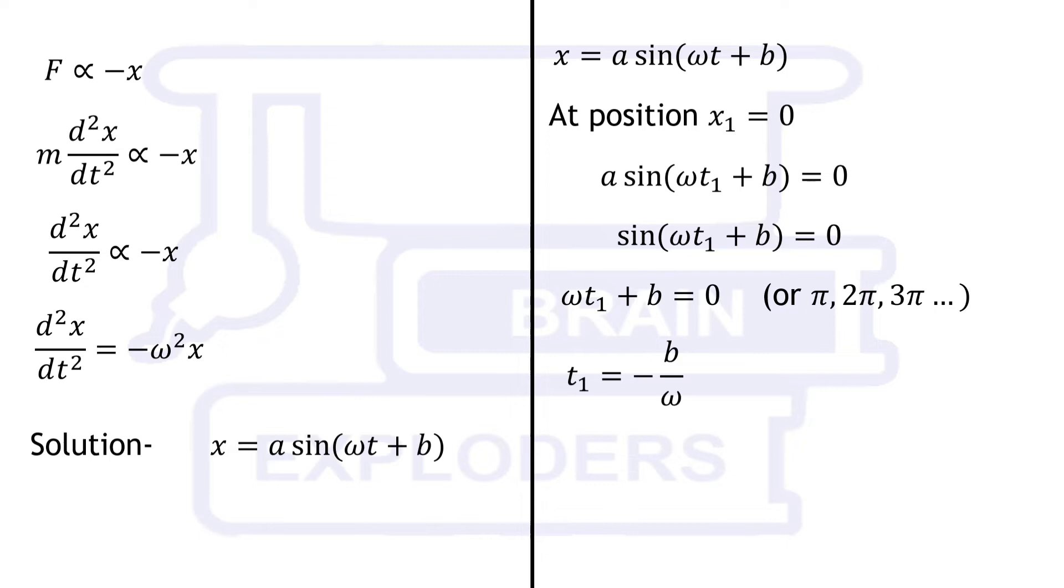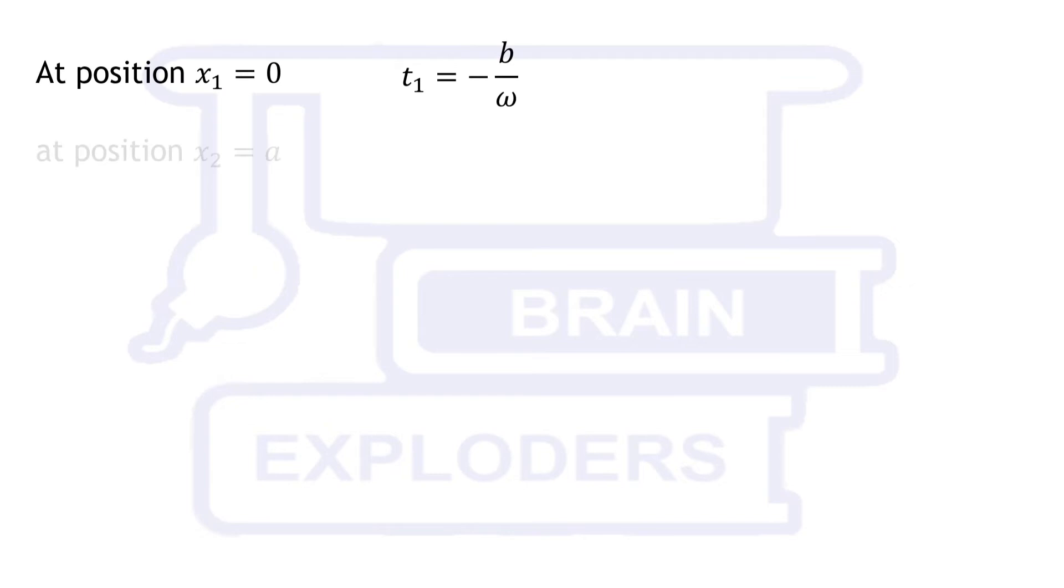Similarly, when object is first time at extreme position or when x equals a, t2 is equal to 1 over omega times pi by 2 minus b. Time difference between these two positions is pi by 2 omega.